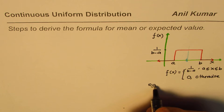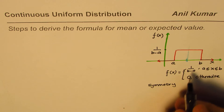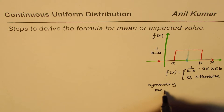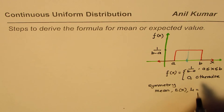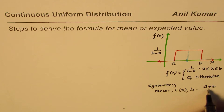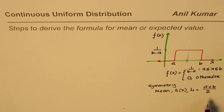So from symmetry we can say that the mean, or expected value mu, will be equal to half — the center value — which is a plus b divided by 2. That is the formula we are going to derive.